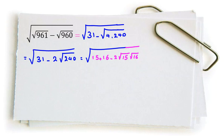So it will be what? It will be square root of 15 squared plus square root of 16 squared minus 2 times square root of 15 times square root of 16.